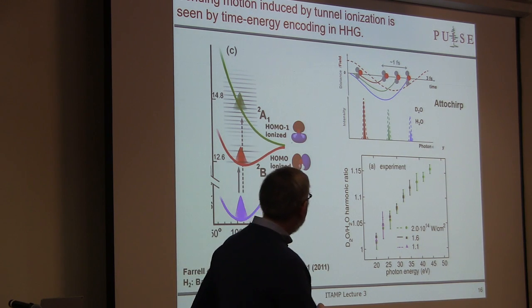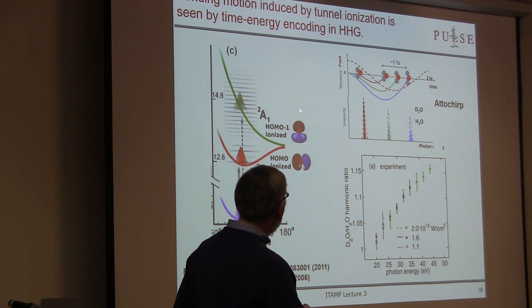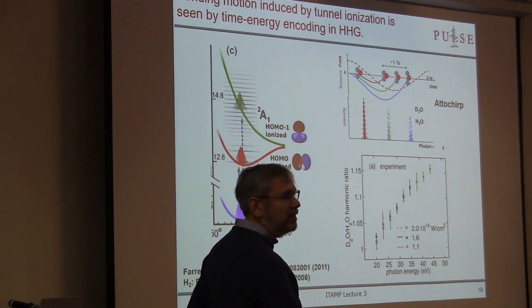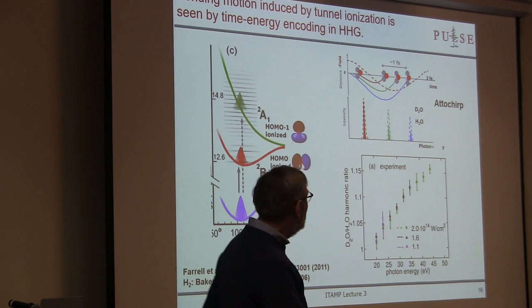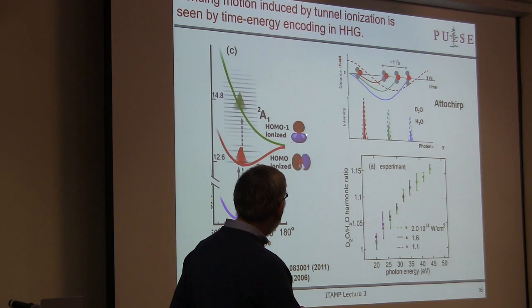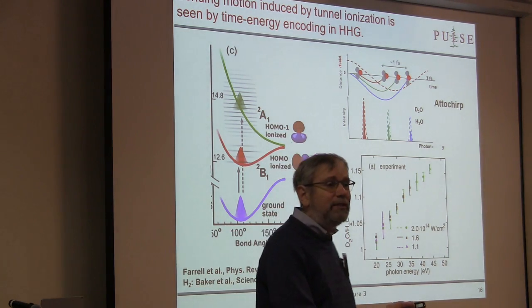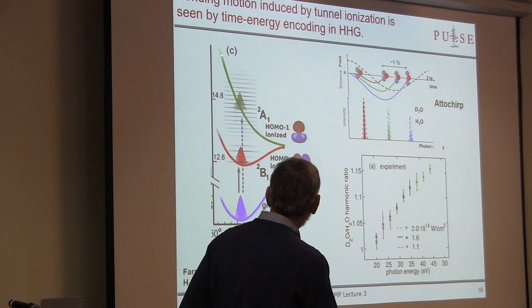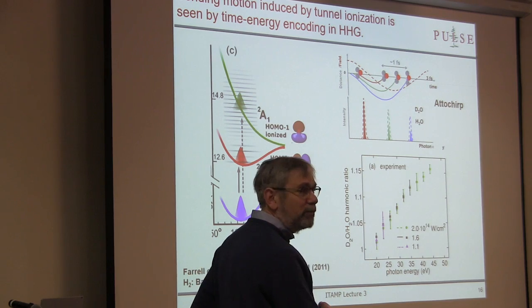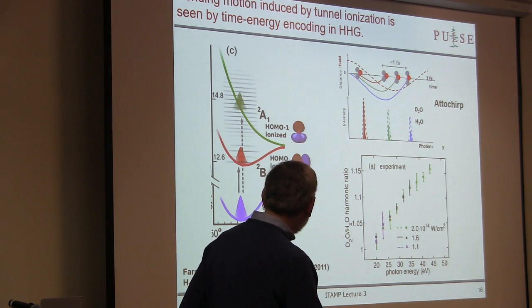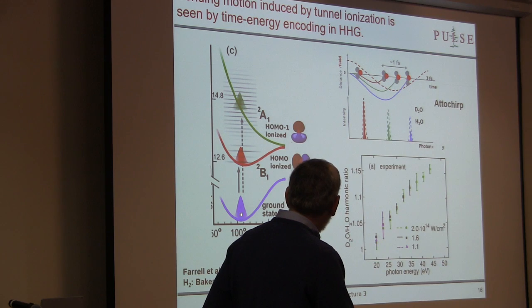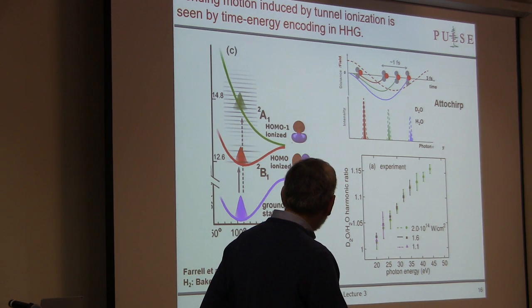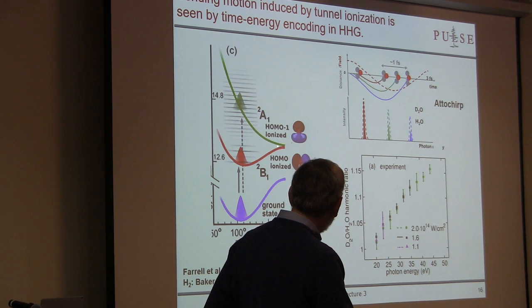That's interesting, because it means we can — depending on the orientation of the water — either remove the HOMO or the HOMO minus 1 in high harmonic generation. If we remove the HOMO minus 1, the water is going to want to unbend. That's well known. Here's the potential energy curve where HOMO minus 1 is the orbital removed, and this is the bond angle. At 180 degrees the molecule is straight. Here's where it likes to live in the ground state of the neutral, and here's where it would like to live if you remove the HOMO minus 1.